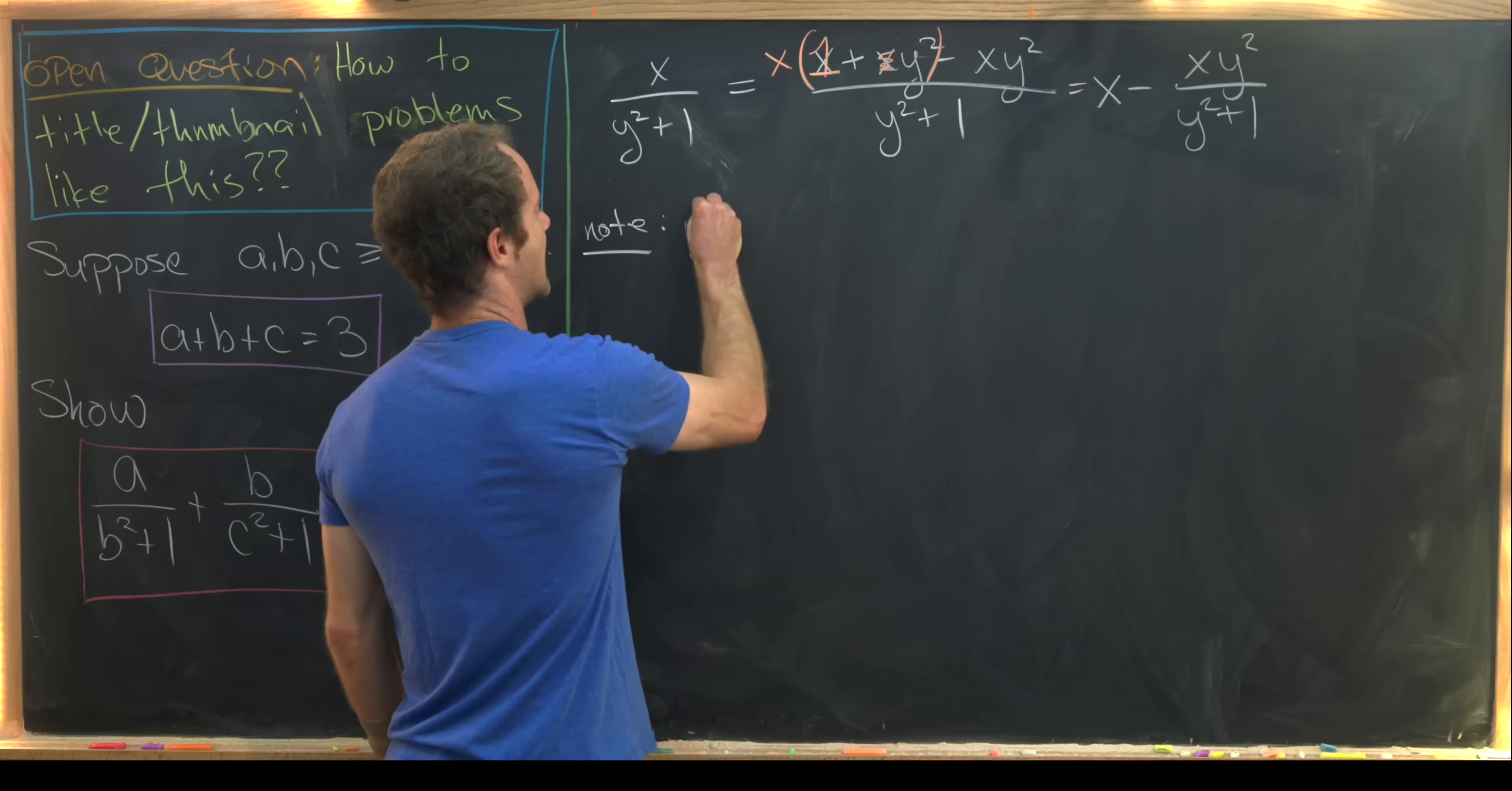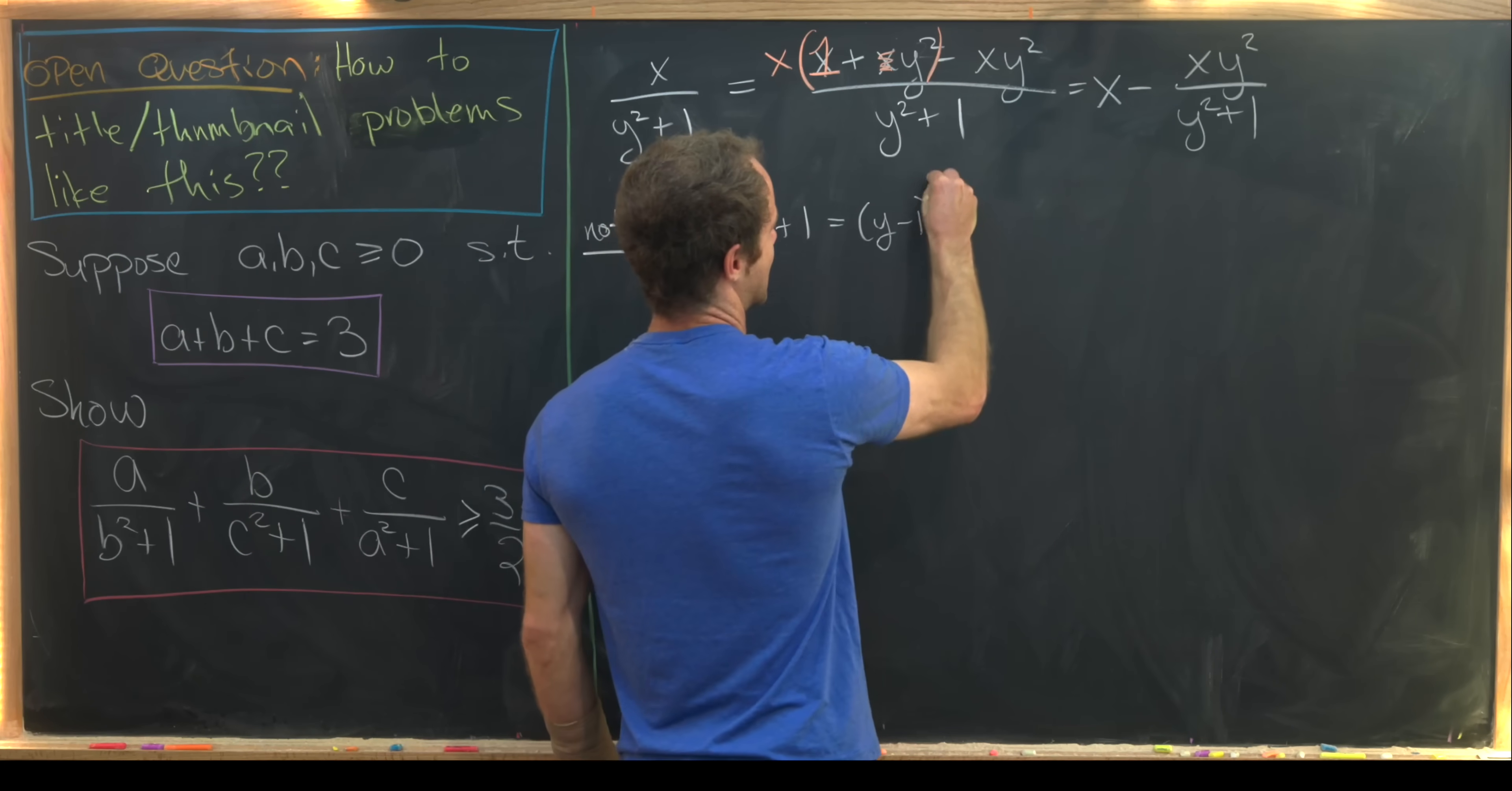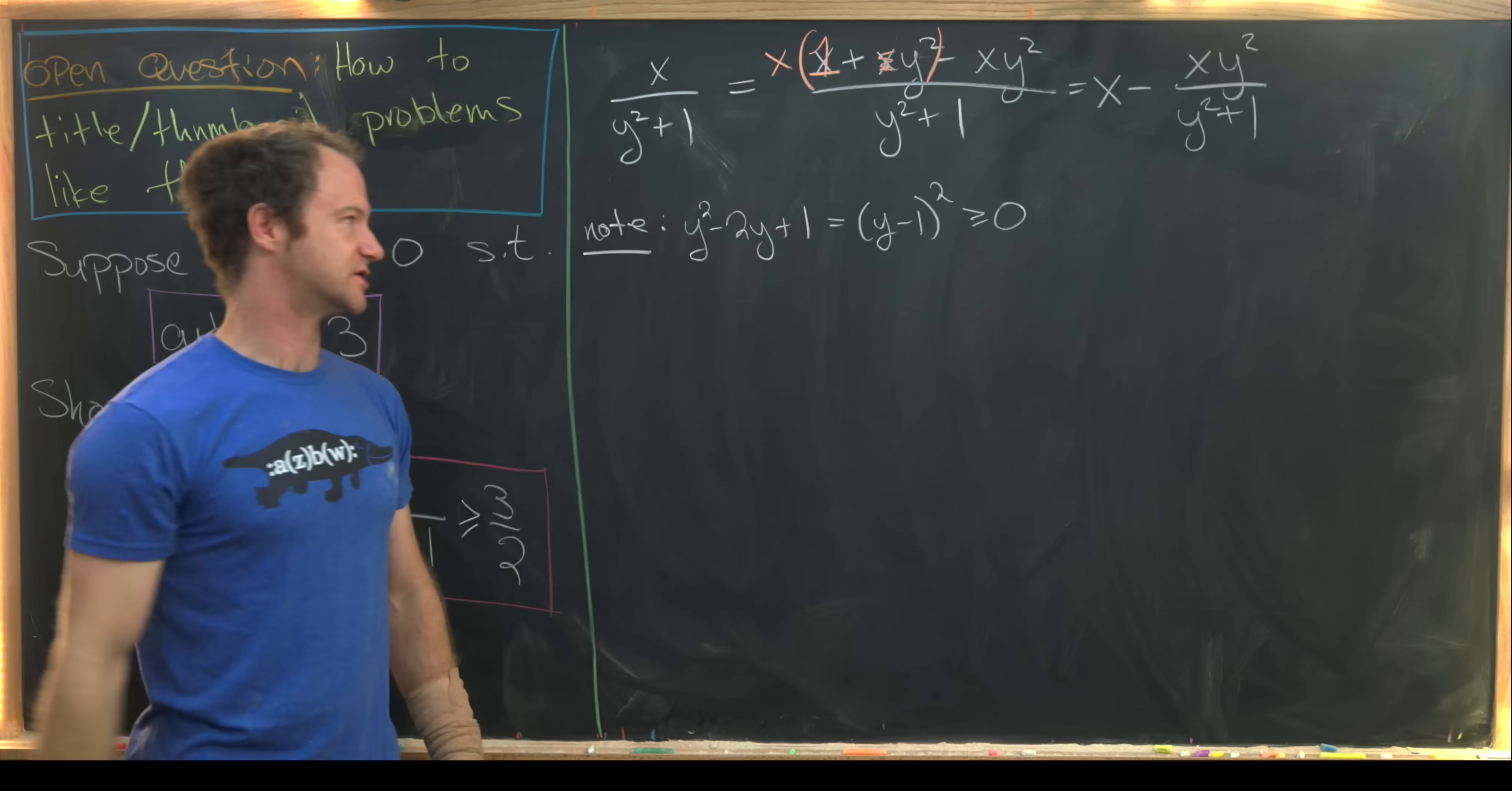And that is y squared minus 2y plus 1 easily factors as y minus 1 quantity squared. But if you square any real number, you get something that is bigger than or equal to 0.